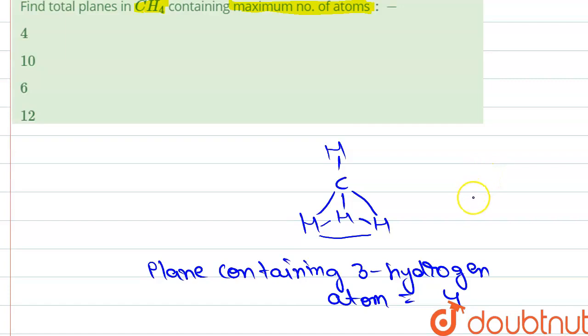And there is another possibility of containing three atoms: one carbon atom and two hydrogen atoms. So from here we can see that there is this plane, this plane, and this plane.